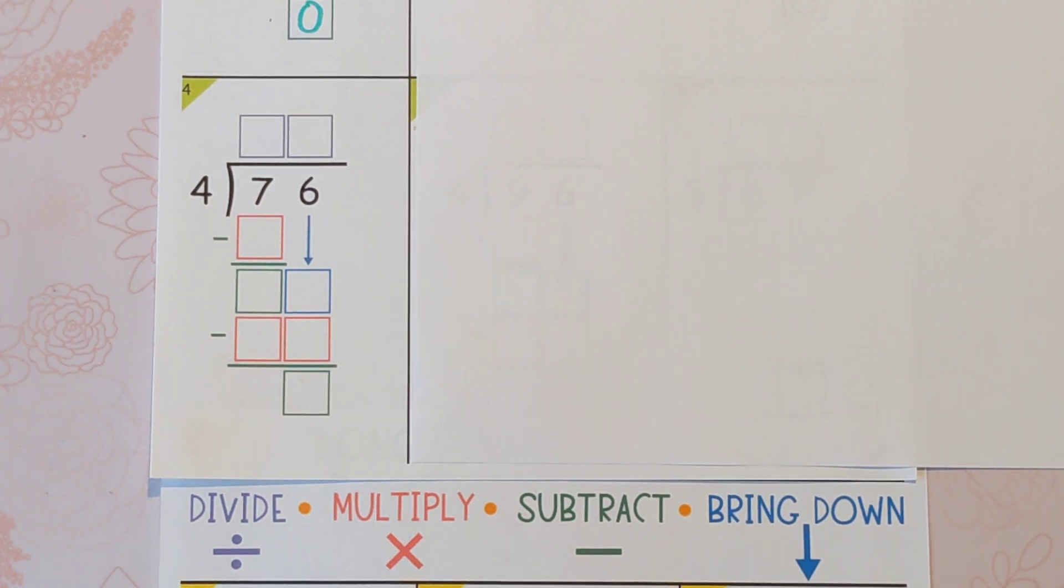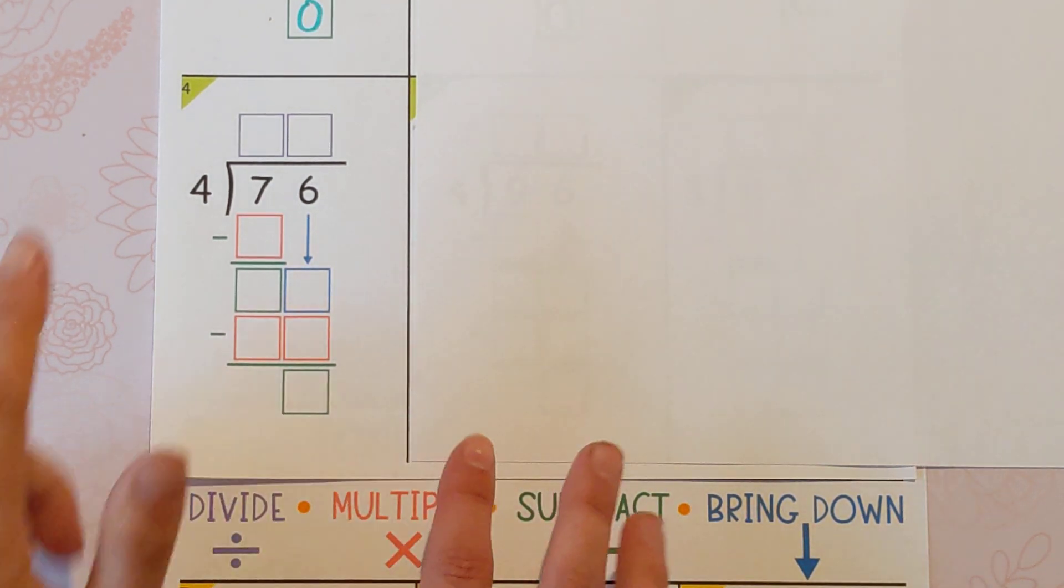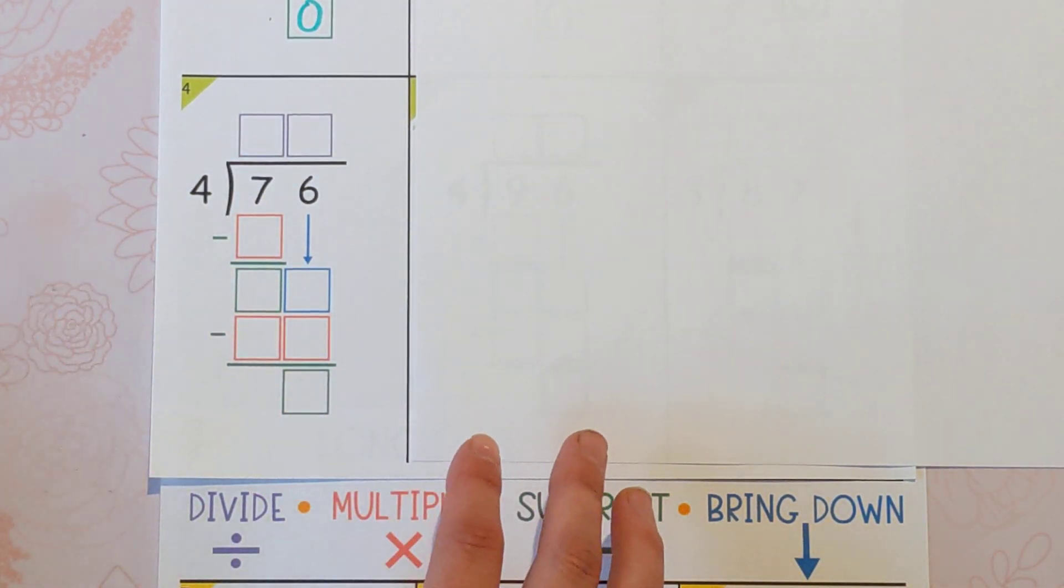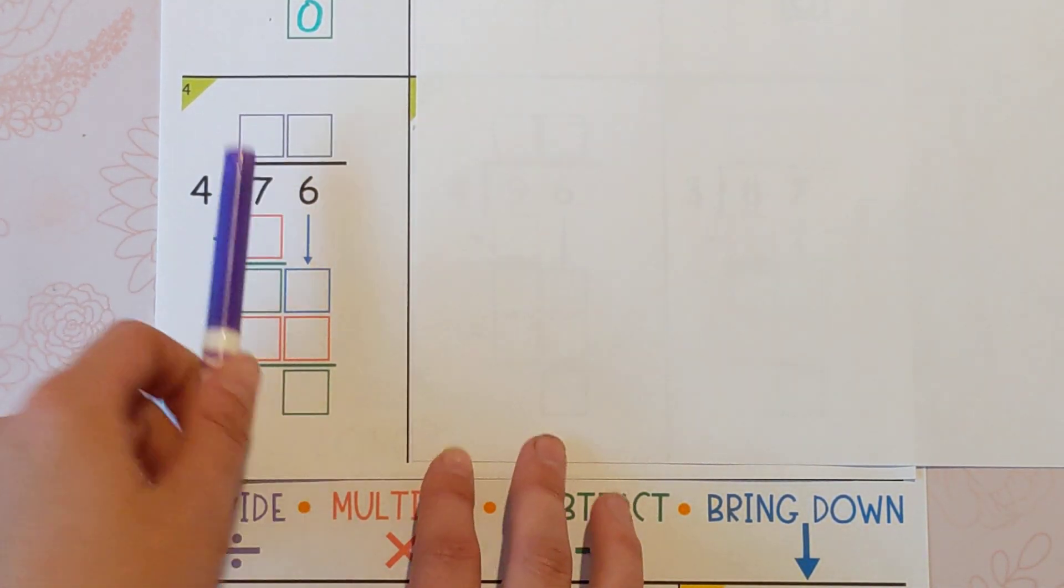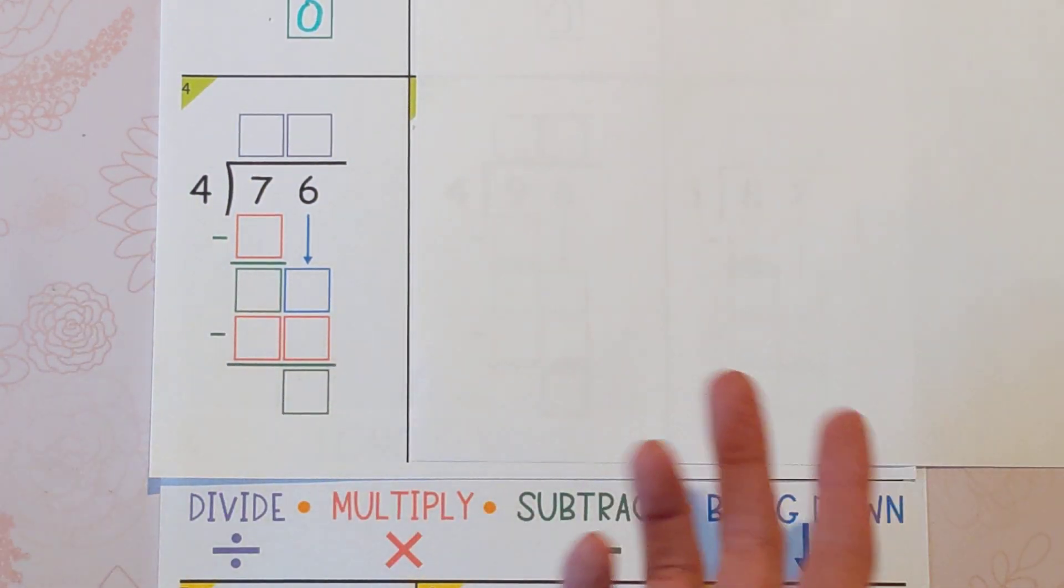So you can follow along if you have these worksheets or click on the link and get them, but you can also just grab a piece of paper and follow along with me. The first step is to divide, and we're starting with the seven, going left to right.